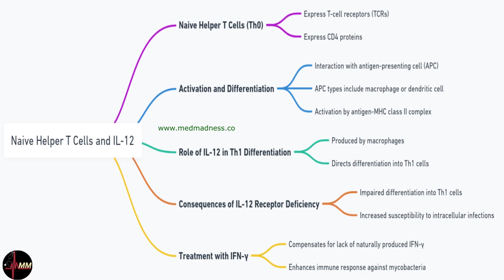Helper T cells that haven't encountered an antigen are termed naive or Th0 cells. These cells are like blank slates, ready to be shaped by the antigens they meet. They express T cell receptors or TCRs and CD4 proteins, which are essential for recognizing antigens presented by other immune cells.